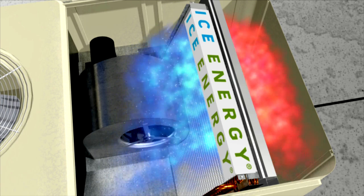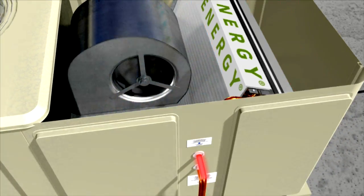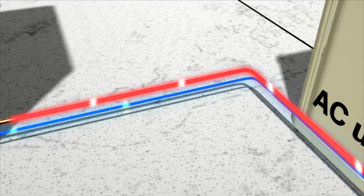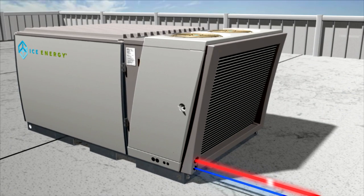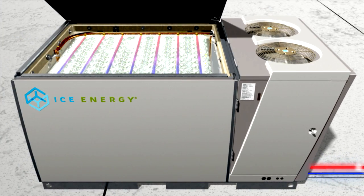The cool air continues on its path into the building, while the hot refrigerant travels back to the IceBear. Rather than using the AC unit's compressor, the IceBear then uses the cold energy stored in the ice to cool the refrigerant.